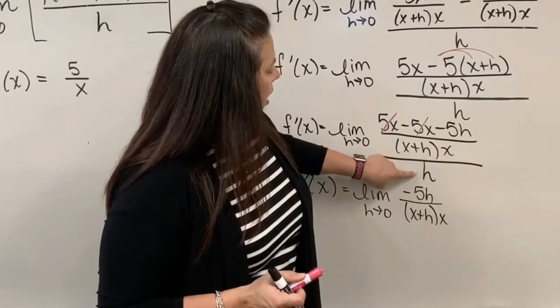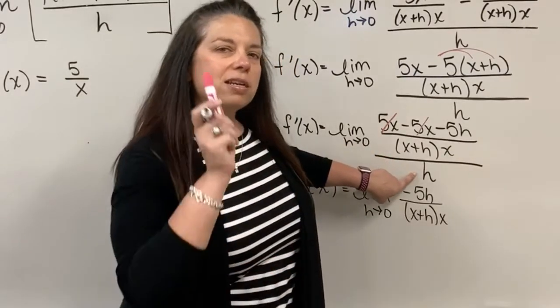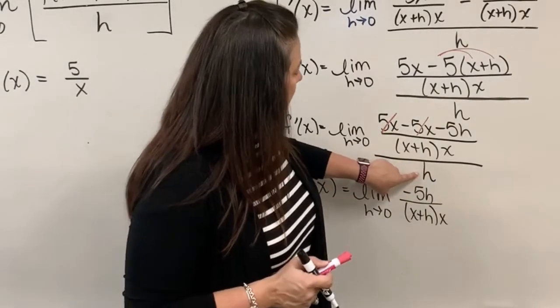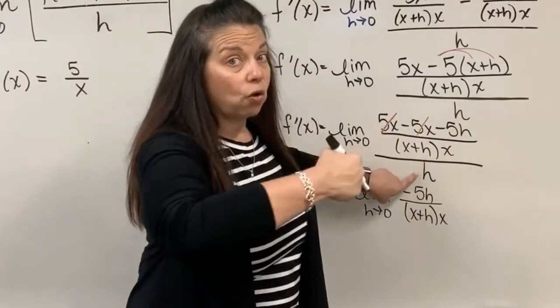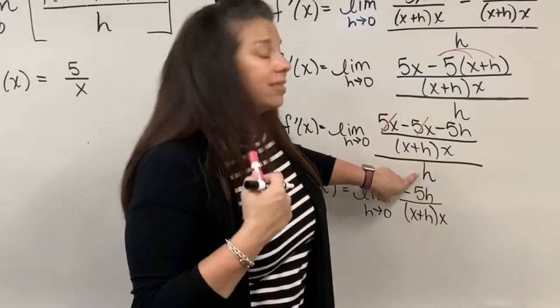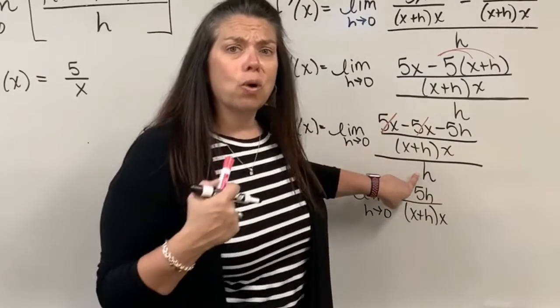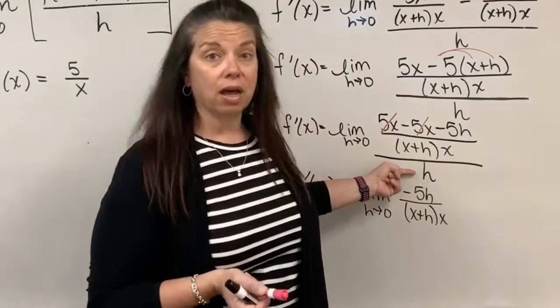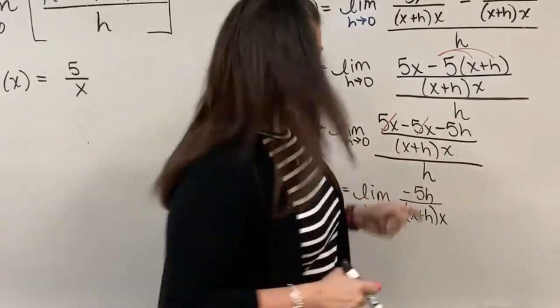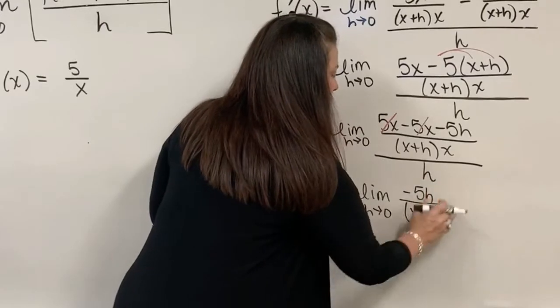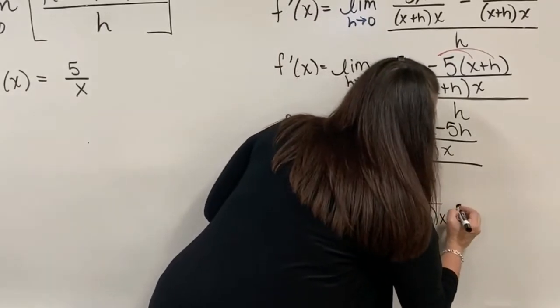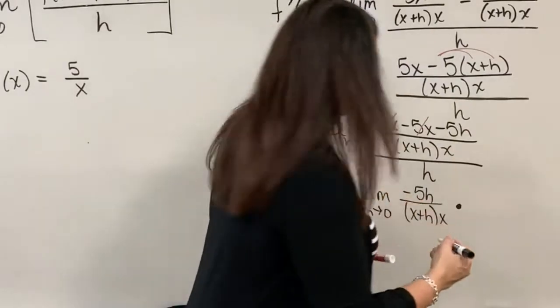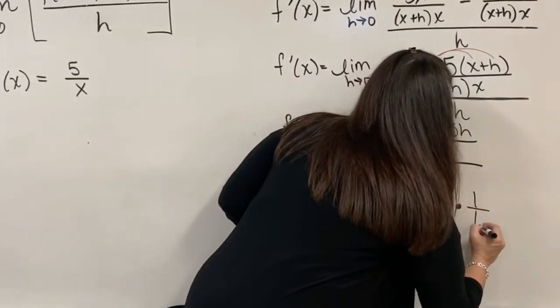Instead of dividing by h, I can think about that, by the way, as being h over 1. Well, instead of dividing by h over 1, I can simply just multiply by the reciprocal of this h. So I'm going to take my fraction that I have here, and I'm going to multiply by the reciprocal of h over 1, which is, in essence, 1 over h.